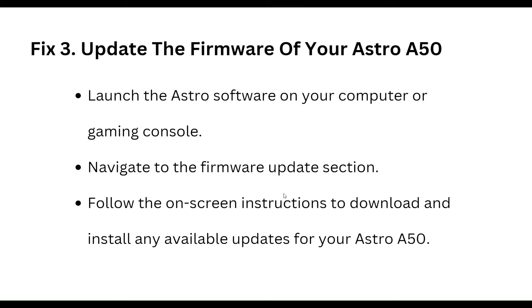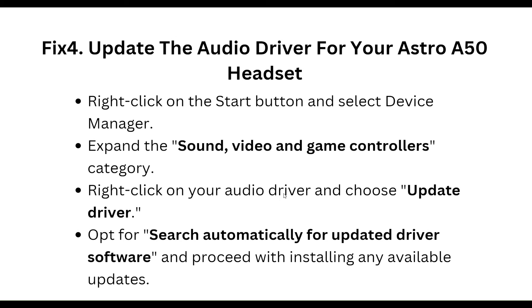Our third step is to update the firmware of your Astro A50. Launch the Astro software on your computer or gaming console. Navigate to the firmware update section, then follow the on-screen instructions to download and install any available updates for your Astro A50.